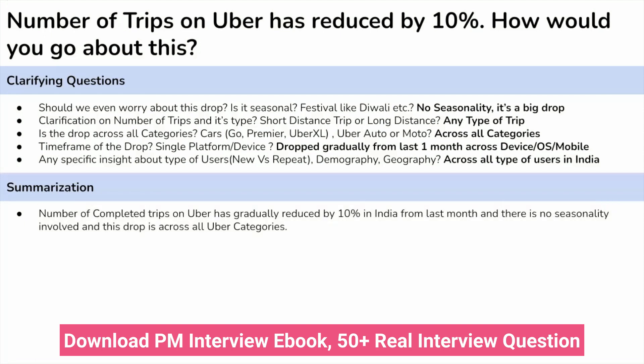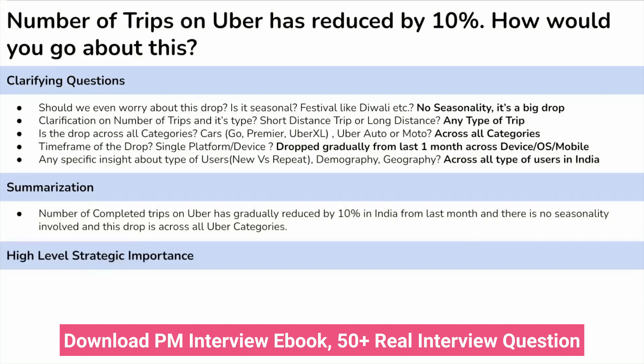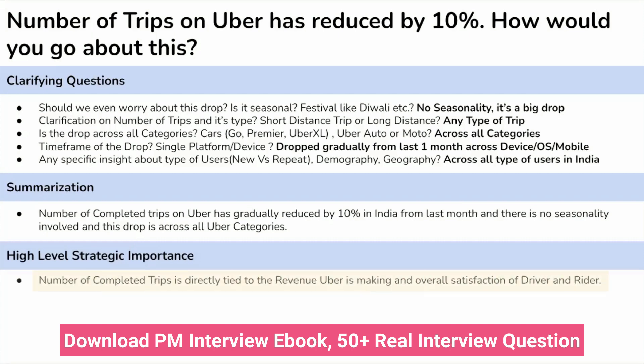Before jumping into diagnosing the problem, let's first understand the strategic importance of this metric. Number of Uber rides is the most critical metric for Uber — I think it should be the north star metric as well — because more number of rides indicates more money to Uber through commission, more money to the driver, and convenience to the rider. This metric sits between all three stakeholders involved.